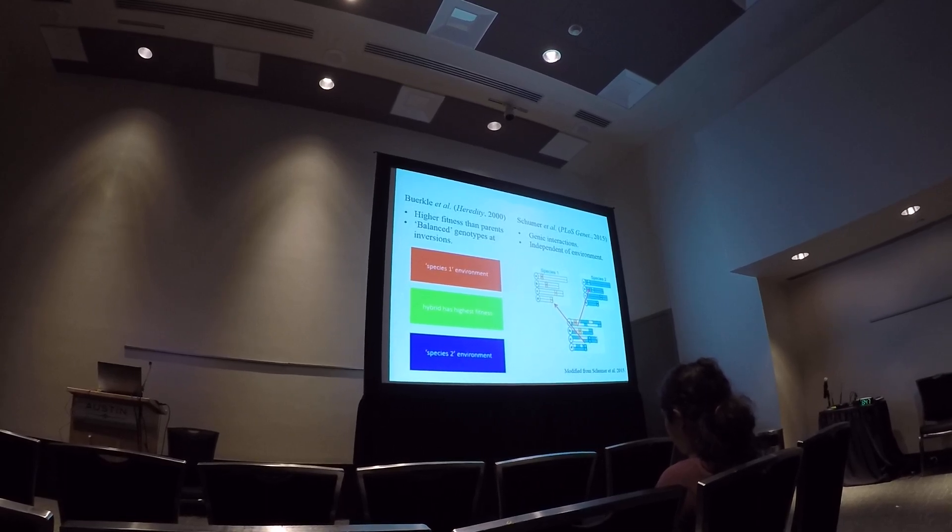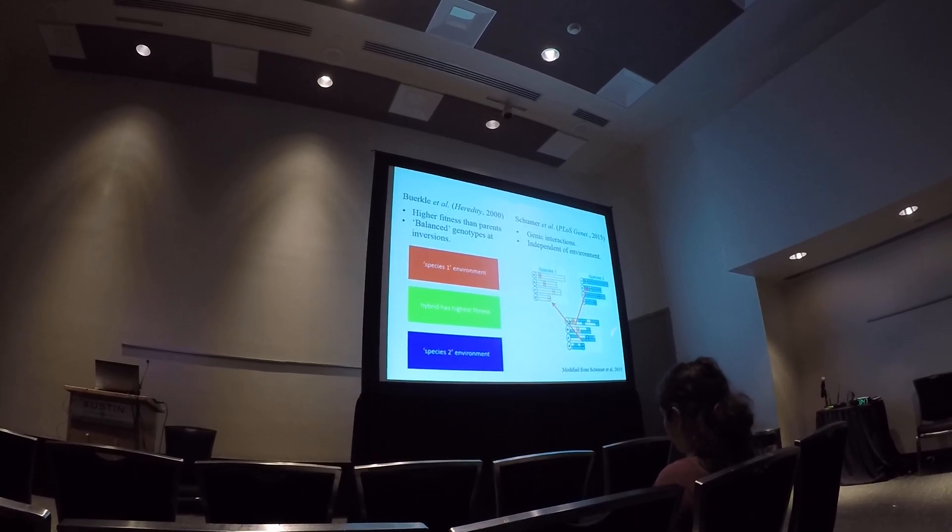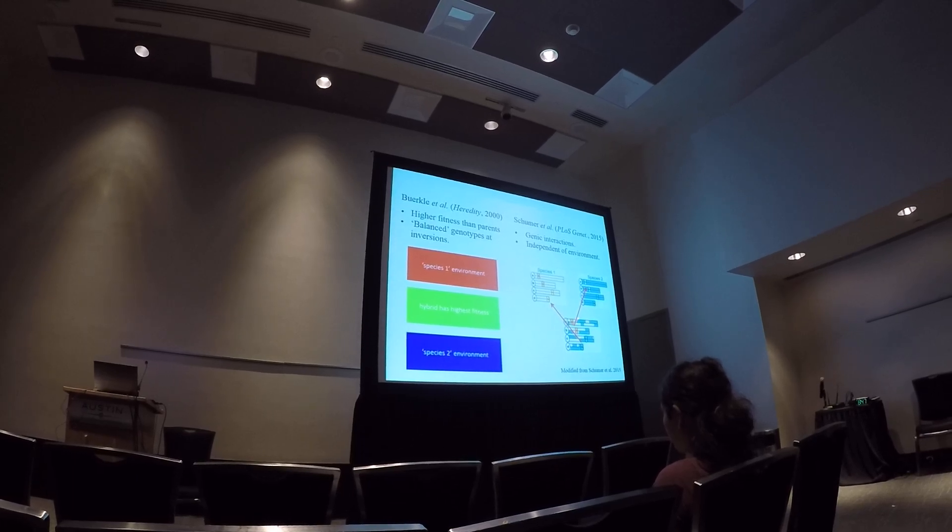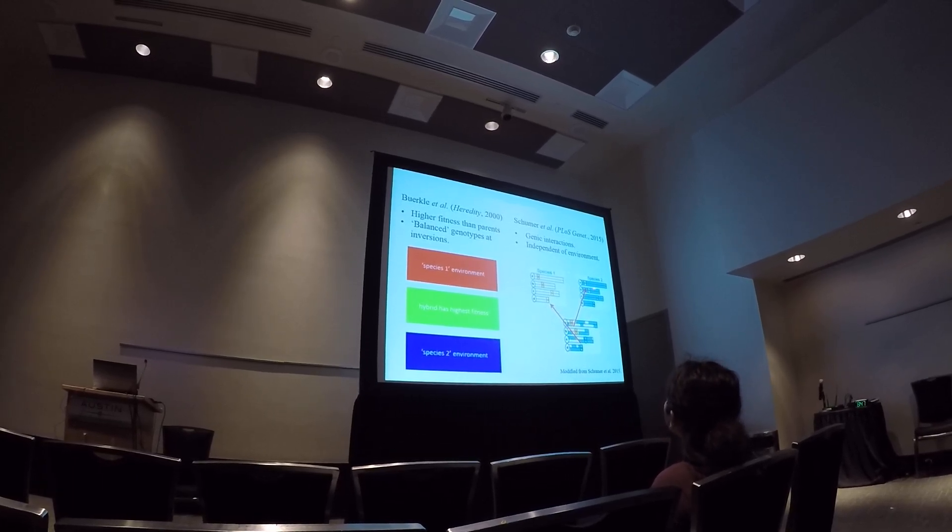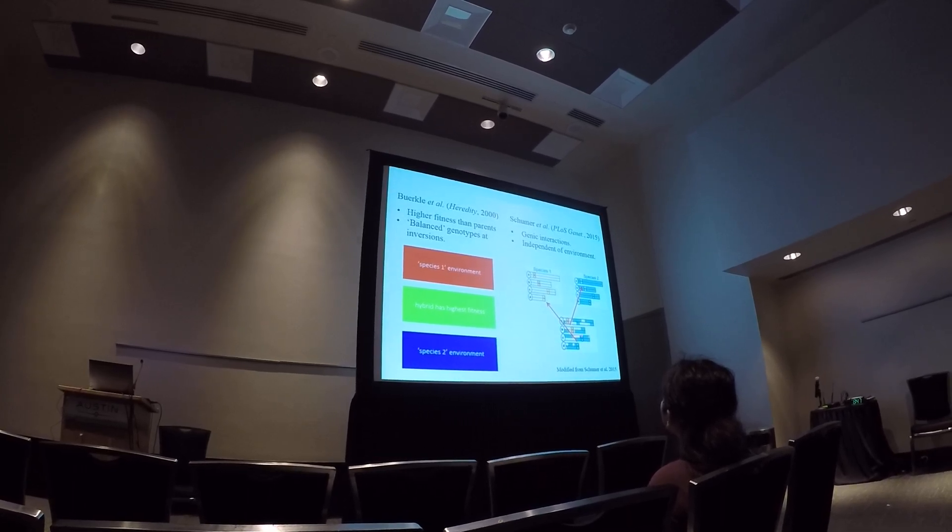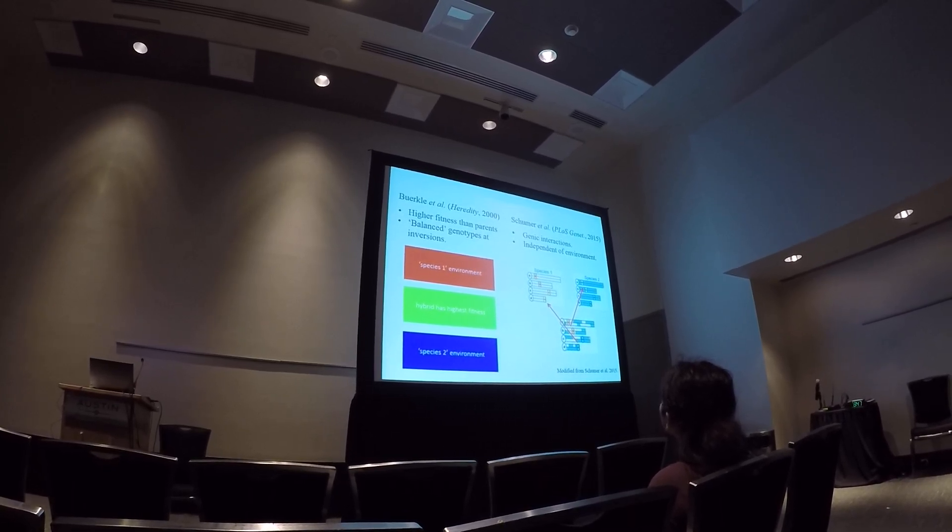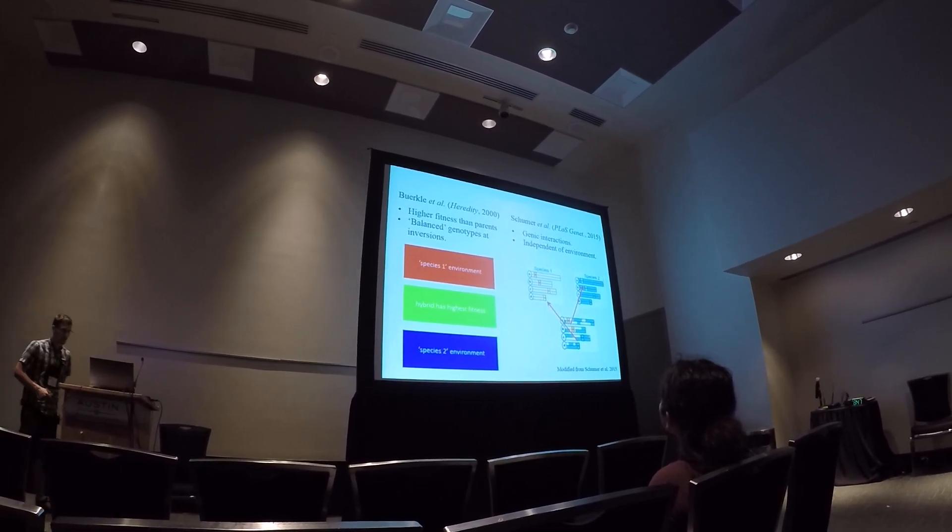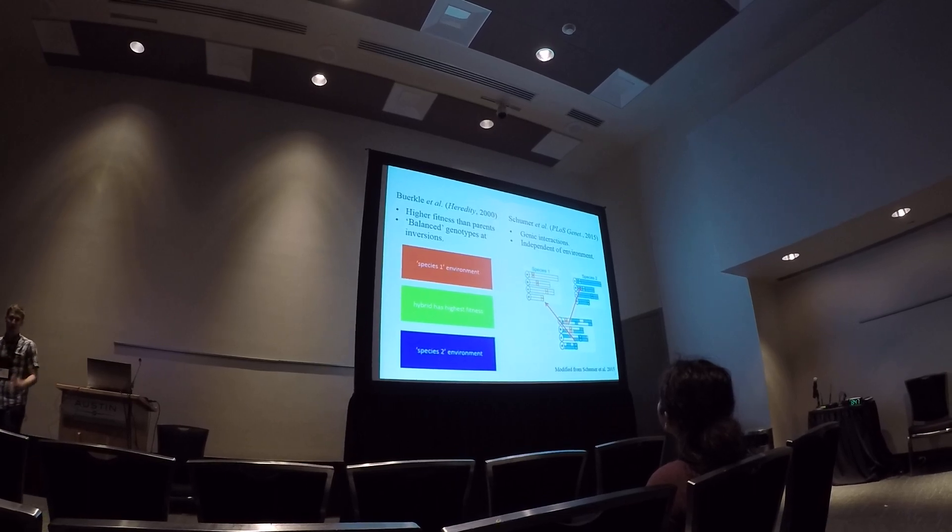And within the genomes of the parents, they have multiple epistatic pairs of loci. Those pairs become balanced in the hybrid population so that this pair of loci here, the yellow loci, now when the hybrids mate with this parental species, they'll have some incompatibilities, and the same is true at this second locus when they backcross or mate with the first species. So again, reproductive isolation evolving independently of ecology due to genetic interactions.